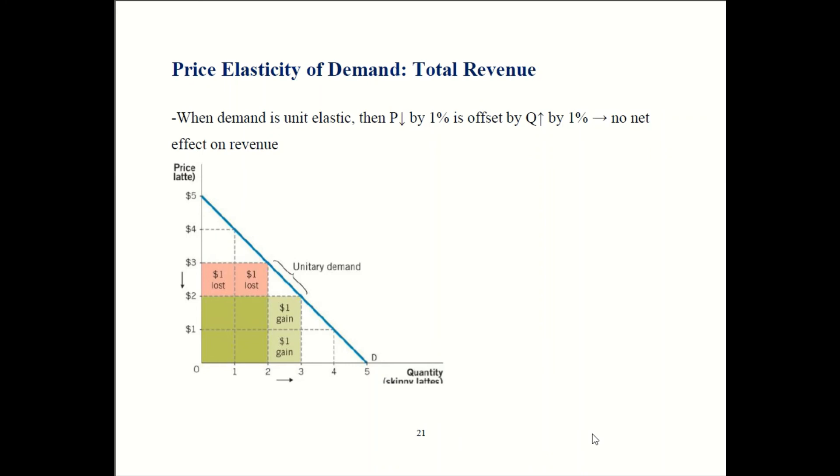So let's talk about unit elastic demand. That's where the elasticity was one. In that case, a one percent change in price caused a one percent change in quantity. So it's going to exactly offset and your revenue will be unaffected. So here the firm had a price of three and they sold two units. Three dollars per unit times two units translates into six dollars of revenue. If they cut prices to two dollars, they sell three units. Two dollars per unit times three units comes out to still six dollars. So you sold more units, but then you lost revenue per unit. Those effects exactly offset when demand was unit elastic. So you still have the same total revenue.